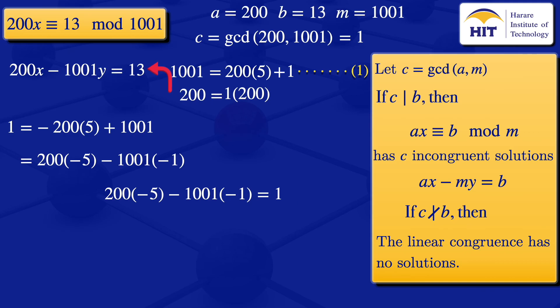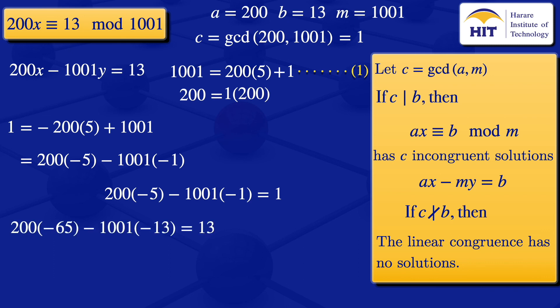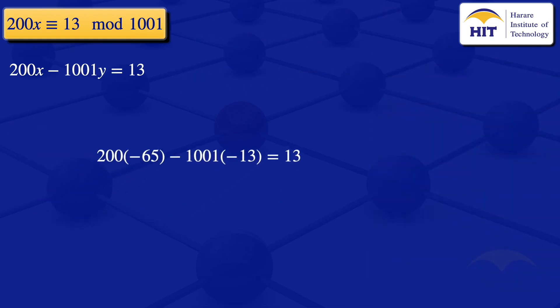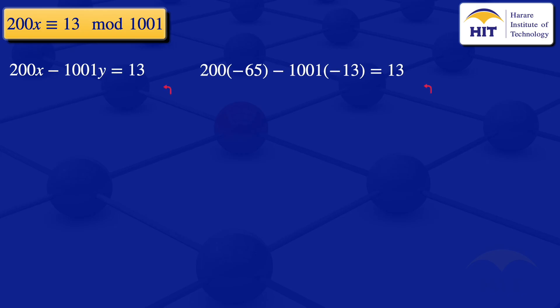We have 200 × (−5) − 1001 × (−1) = 1, but we need 13 on the right-hand side. So multiply by 13: 200 × (−65) − 1001 × (−13) = 13. Comparing with equation 1 (200x − 1001y = 13), by comparison x = −65.